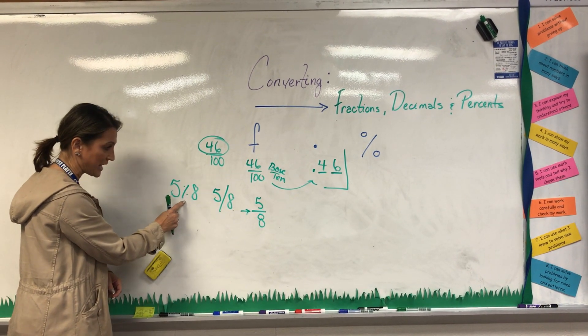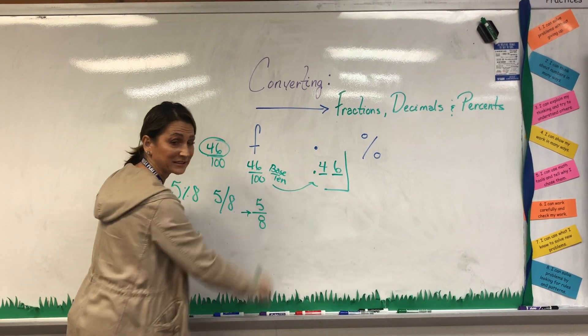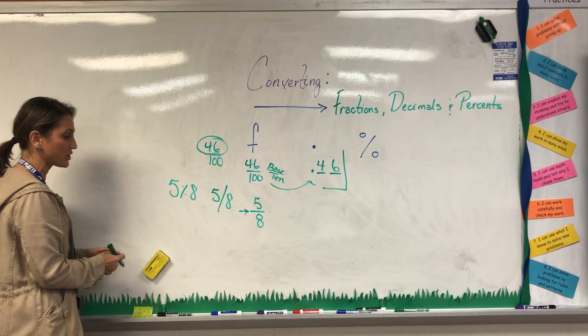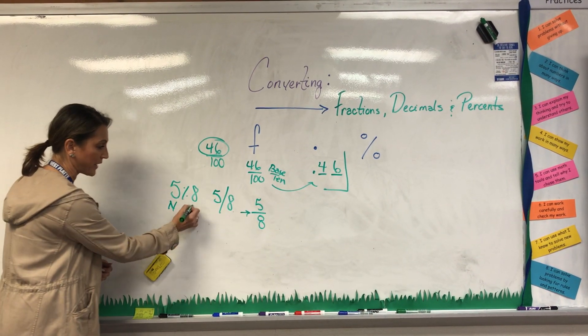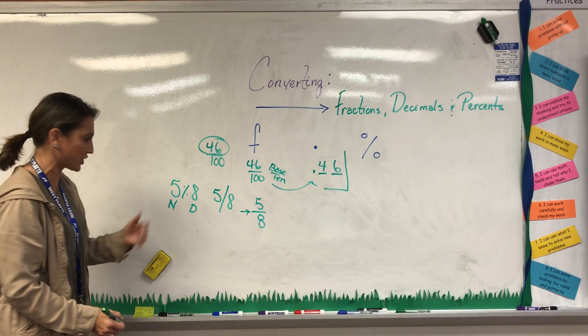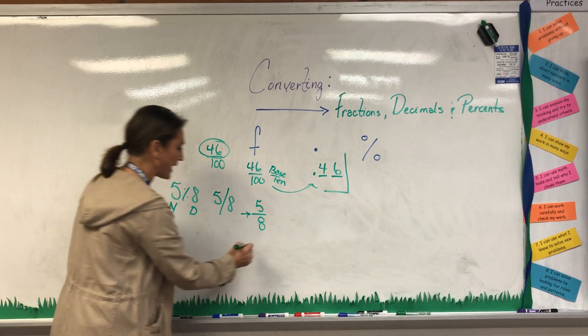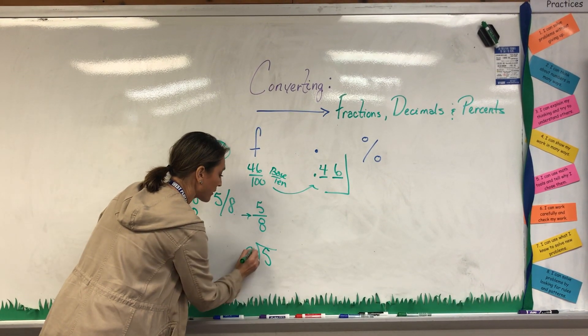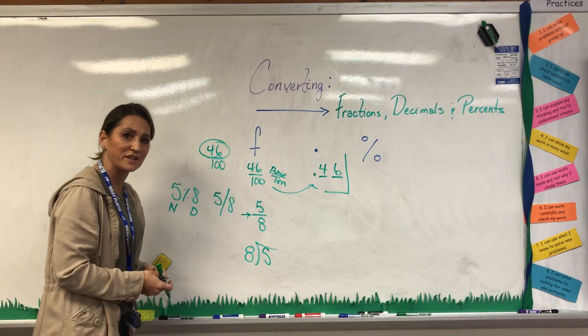So for me to change this to a decimal, I then have to use division. And we know that numerator and that denominator has a certain position. The numerator must go in and the denominator must go out and I must do my division that way.